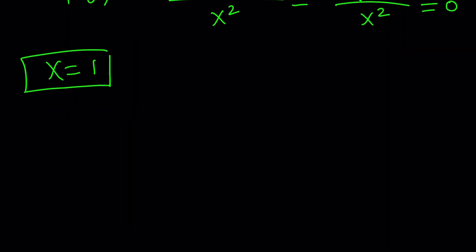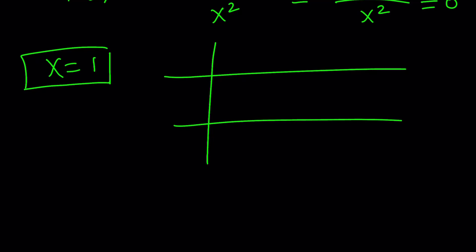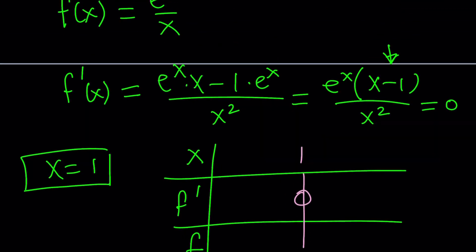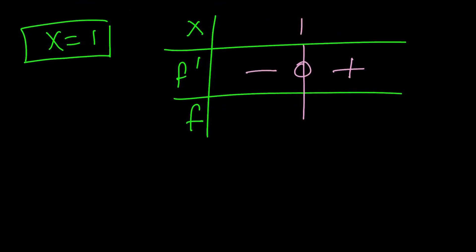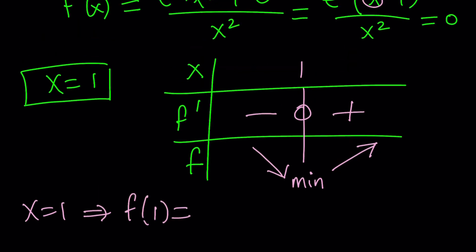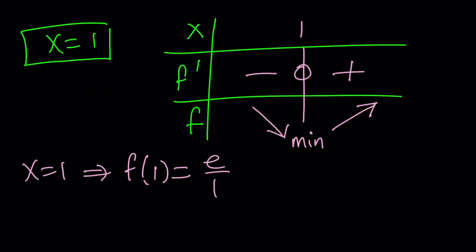So let's go ahead and make a table with three rows. We have the x, f prime, and f. Now we're going to go ahead and put the critical value 1 here, that's where the derivative changes. In this case, if x is greater than 1, f prime is going to be positive, otherwise it's going to be negative, which means our function is going to decrease and then increase. And that means we have a minimum at x equals 1. For x equals 1, we get f of 1 is equal to e to the power 1 which is e divided by 1, which is e.